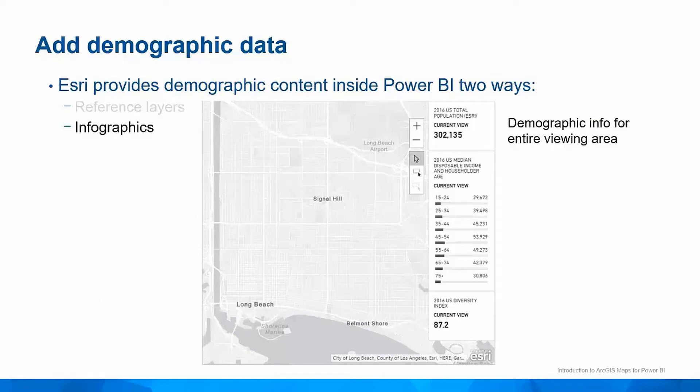For those of you who are unfamiliar with what infographics are, they are quick visual indicators that provide glanceable, easy-to-understand information. Our infographics are based on the same underlying data the demographic reference layers are built from, but the infographics cards provide granular details. Whereas you can only add one reference layer per map, you can add many infographics cards, allowing for a quick look into the wide-ranging characteristics of an area.